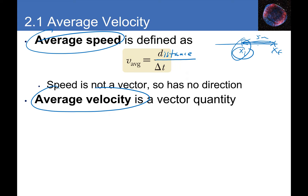Distance is always positive — no matter which direction you move, you add to distance. Displacement, however, depends on your starting and ending points. If you return to the same place, displacement is zero. Displacement can be positive, negative, or zero. Distance can never be negative or zero once you've started moving. Taking distance over time gives average speed, since speed is a scalar quantity.